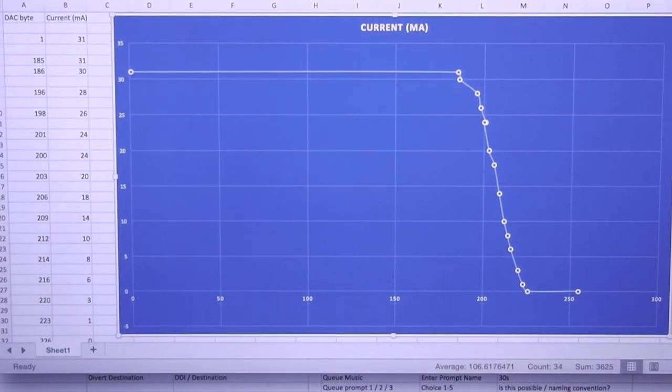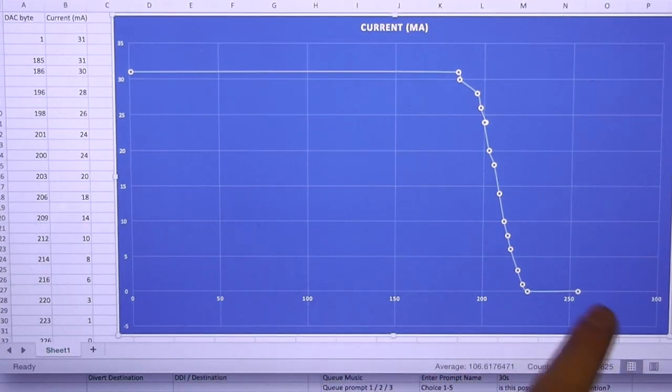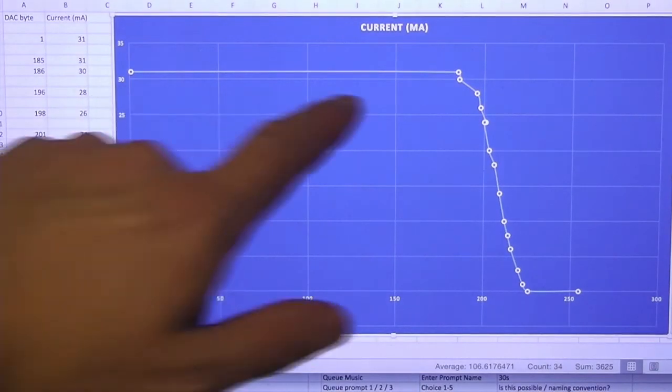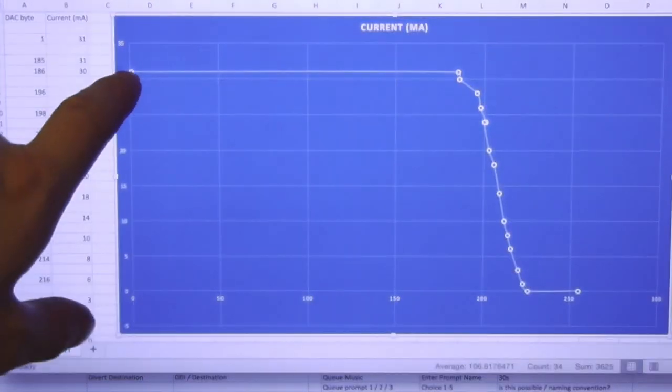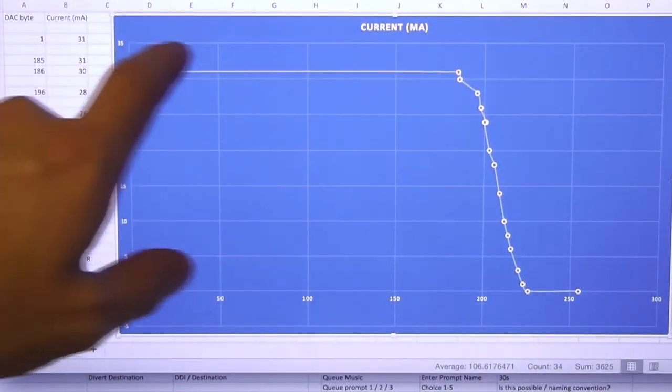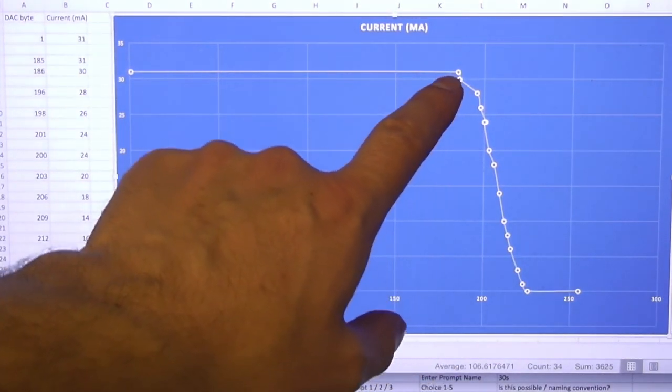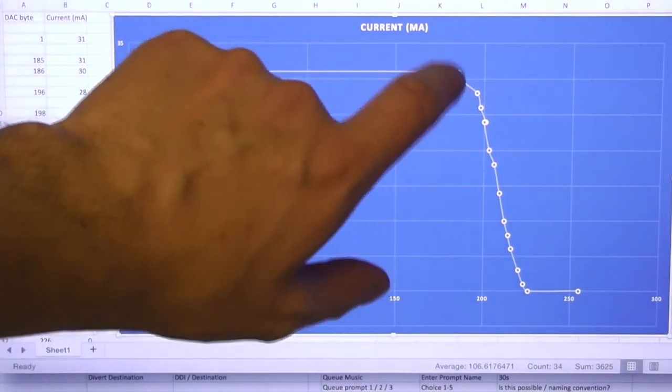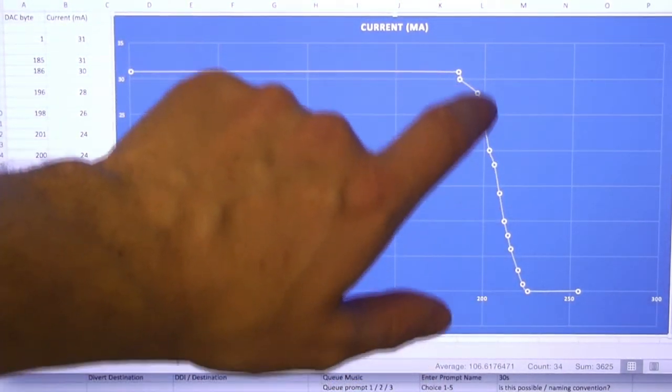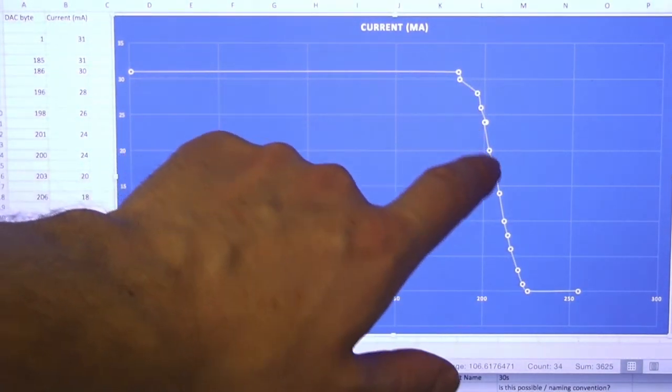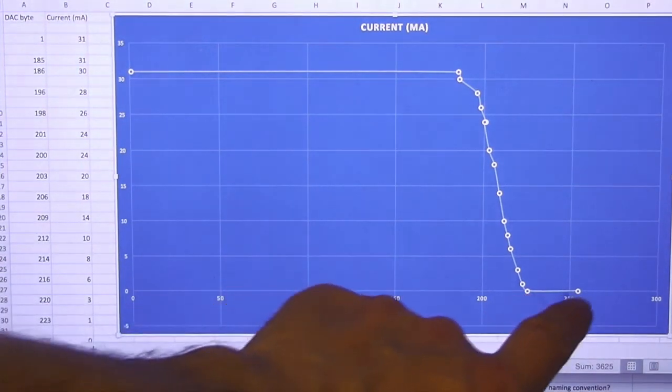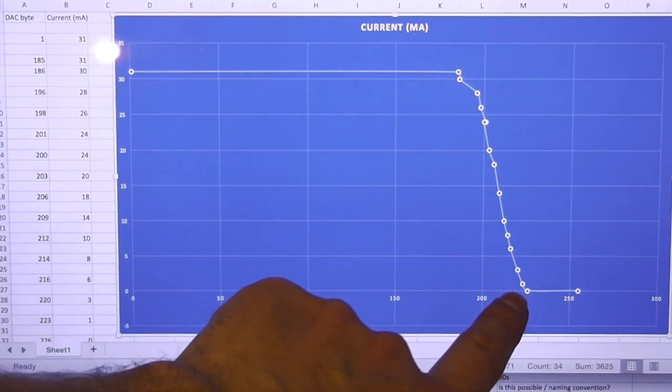So there's my graph of current against the value of the byte. The value of the bytes along the bottom, zero to 255, which corresponds to a voltage coming through the DAC. But the actual voltage is unimportant because we're interested in current. And up here, we have 31 milliamps, which is the maximum, which remain the same until you get to approximately like 180 on the byte value. And then we have this roughly linear region. It probably is linear. It may be just my measurements or something about my method which makes it seem slightly curved.